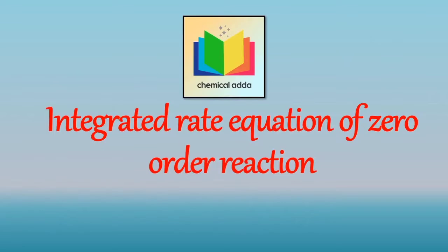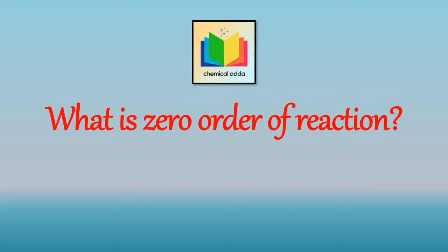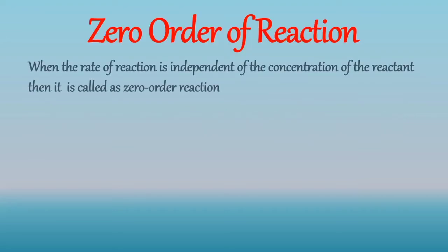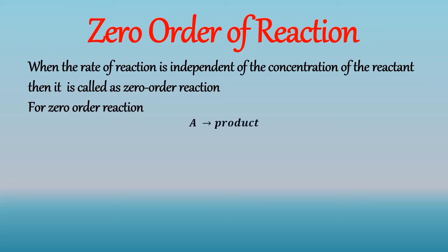First, let's see what is meant by zero order reaction. When the rate of reaction is independent of the concentration of the reactant, it is called a zero order reaction. For example, if A gives product and it is a zero order reaction, then the rate equation can be written as minus r_A is equal to k, where minus r_A is the rate of reaction and k is the specific reaction rate constant. Hence, minus r_A depends only on k and is independent of concentration, as there is no concentration term on the right hand side.